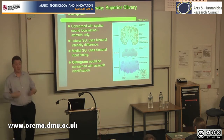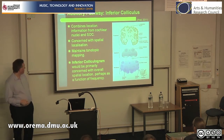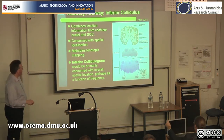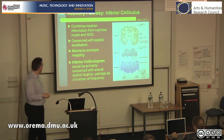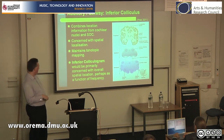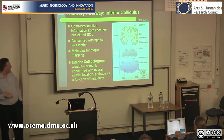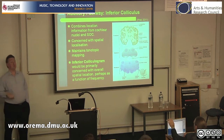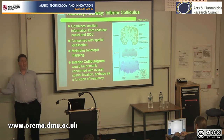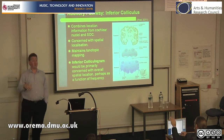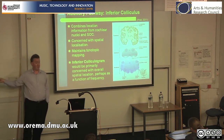The inferior colliculus is the next stage up. It is somewhat concerned with spatial location, maintains the tonotopic mapping, and arguably combines this information. There is some evidence that the inferior colliculus is the first place where spectral characteristics and spatial location of what you're hearing are combined — so you can identify there's something potentially threatening over there and need to respond.